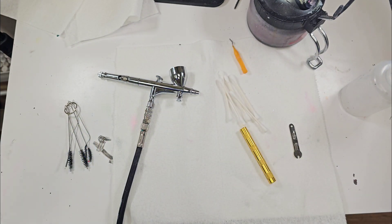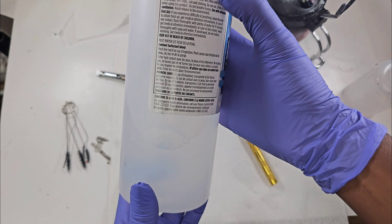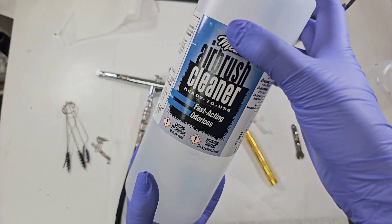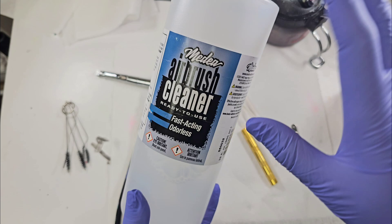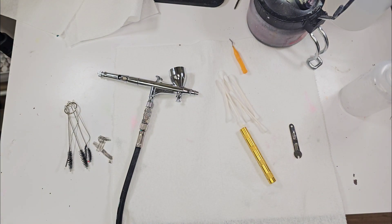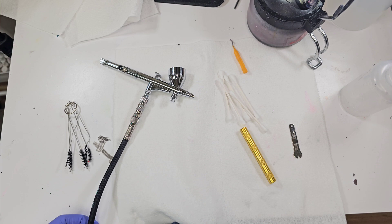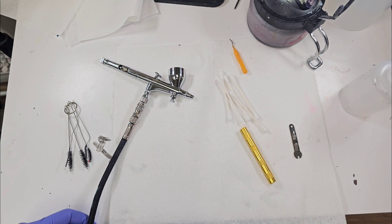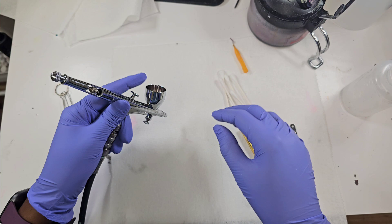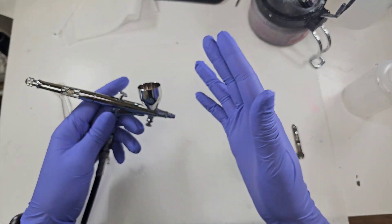This airbrush cleaner is specifically for acrylic airbrush paint. If you are using gel polish and acetone, you will clean that with acetone. If you are using an air gel, you're going to want to use an air gel cleanser.